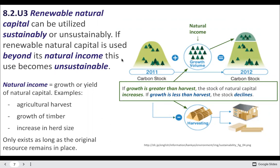There's a distinction between natural capital and natural income, which is subtle but important. You can think of capital as everything that's available — the total stock is the capital. Income is the stuff we're actually using — the growth or yield. Yield is what you take; for example, the lumber we're actually harvesting is our natural income. If we don't take it, it remains part of the natural capital.